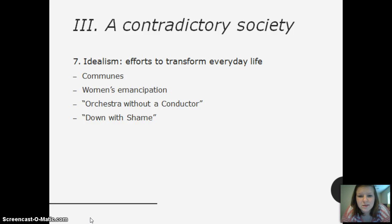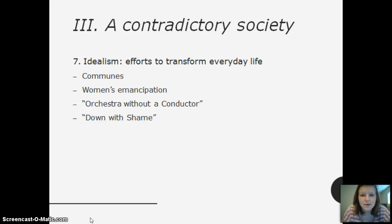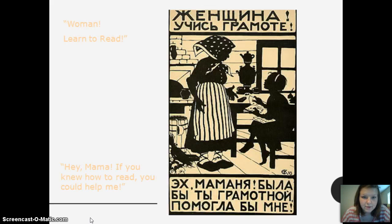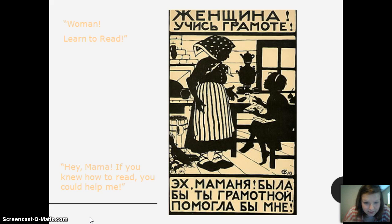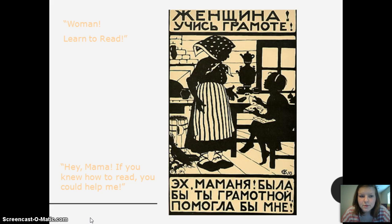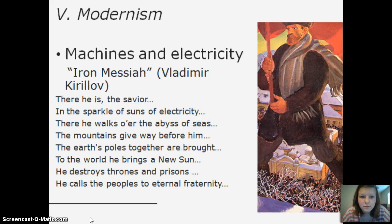There were communes, women's emancipation, orchestra without a conductor, down with shame. It was idealism — they tried to transform everyday life. This poster says 'Woman, learn to read,' and at the bottom a kid says 'Hey mama, if you knew how to read, you could help me.' It's about women getting to do more things.